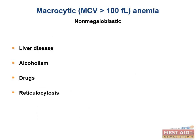The non-megaloblastic macrocytic anemias can be caused by liver disease, alcoholism, and certain drugs. Reticulocytosis will also result in a non-megaloblastic macrocytic anemia, since reticulocytes are larger than mature erythrocytes with a higher MCV.